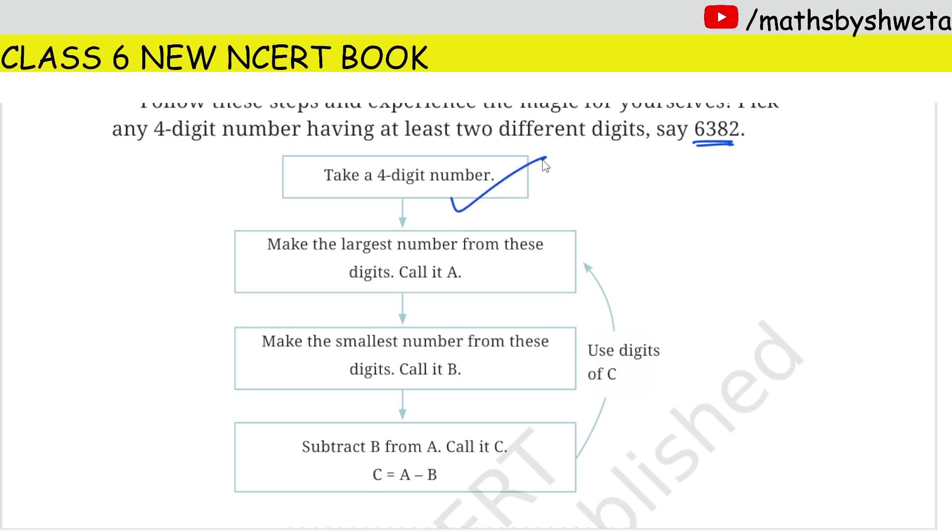Here we have a 4 digit number. Now make the largest number from these digits. This is the largest number from this digit, so 8632. I gave this name A. Make the smallest number from this digit. This is the smallest number from this digit, so 2368. I gave this name B.